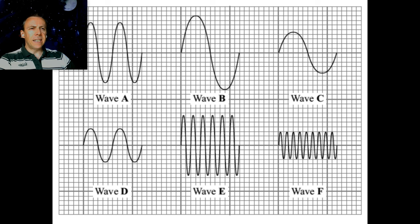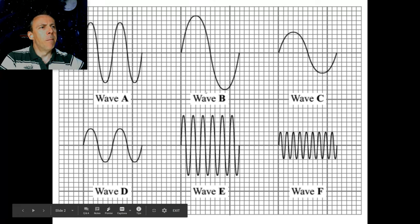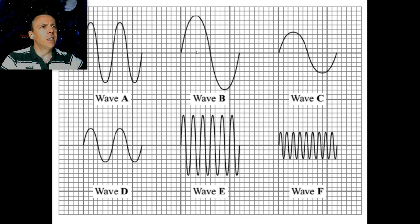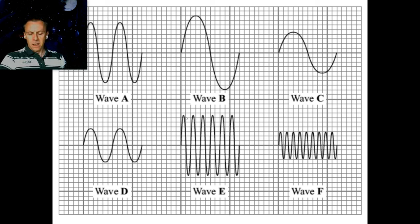Next question — which of the waves has the biggest amplitude? Pause now and have a think. The biggest amplitude is wave B. The amplitude we can spot by the height of the wave above the middle line. This one is one two three four five six seven eight squares high. The next highest — maybe wave E — with about six and a half squares, and they're both the same.